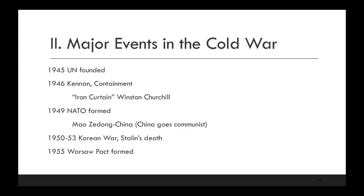Here are some major events in the Cold War. In 1945, the U.N. is founded — we discuss the United Nations in the next video and how it becomes basically irrelevant during the Cold War because the Soviet Union and the United States can't agree. In 1946, George Kennan, an American diplomat, comes up with the idea of containing the Soviet Union. We'll talk about what he says in his famous Long Telegram and 'The Sources of Soviet Conduct,' an article he wrote for Foreign Affairs.